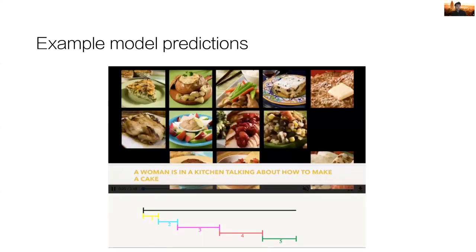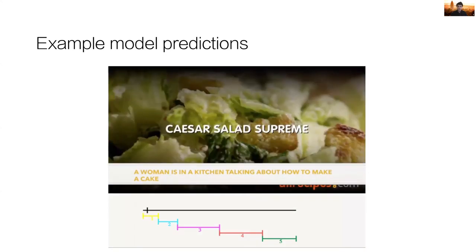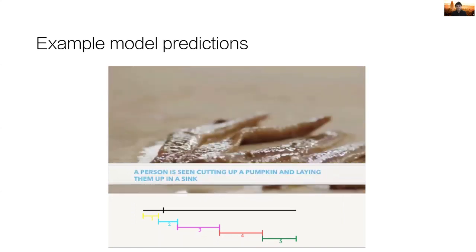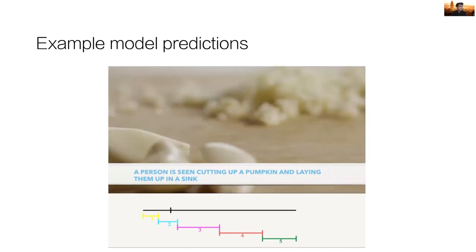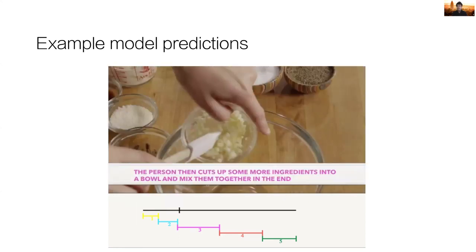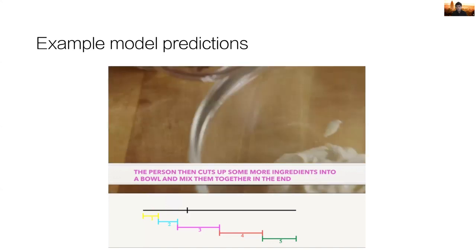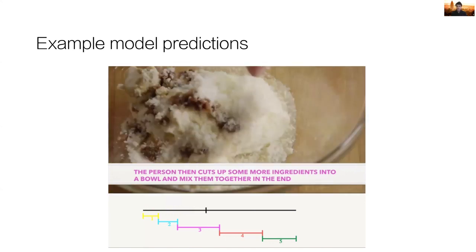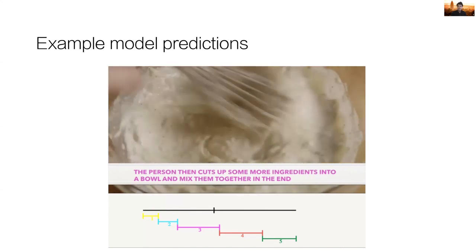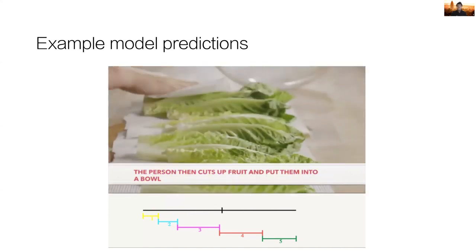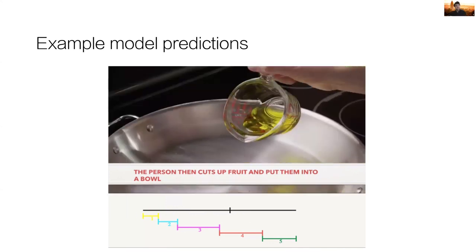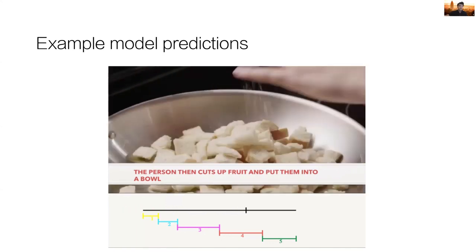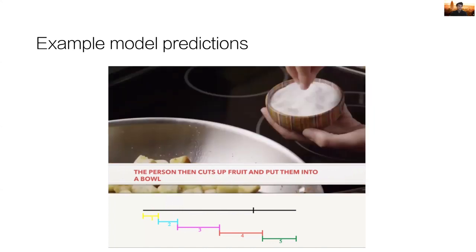And here is another example output from our model. These are captions generated for a specific type of video that commonly occurs in our dataset, which is the instructional video. In instructional videos, events occur in sequence one after another, and our model is able to capture such events and describe each step, even sometimes referring back to previous items that were used in a previous step, and sometimes even setting up what might happen in the future. For example, it sets up that we're going to eventually mix things in a bowl, and then later goes on to describe that event when it does happen.